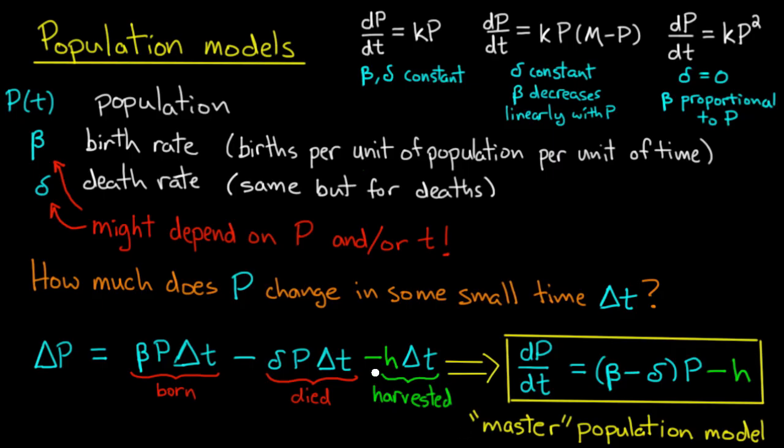So if I add this harvest rate into the change in population, ΔP, then that gives me an extra h term on the right hand side of the population model: dP/dt equals (β - δ)P - h.